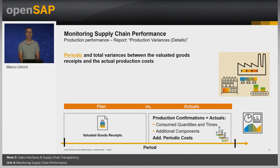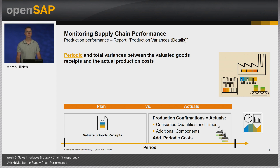If the focus is not only on quantities and times but also on costs, then we need to move to a finance-related area. For instance, we can go to the work center Inventory Valuation. Do we have differences between the planned costs, calculated from the current master data values, and the actuals confirmed for a period? For this, the report Production Variances shows periodic and total variances between the valuated goods receipt and actual production costs.